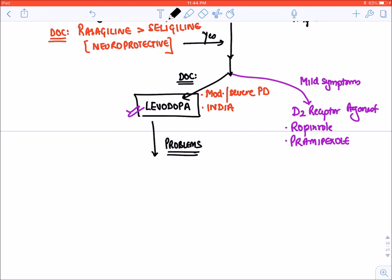The first problem with levodopa is levodopa gets degraded in peripheral neurons. There is peripheral degradation. To reduce this peripheral degradation of conversion of levodopa into dopamine, we give carbidopa and benzazide.